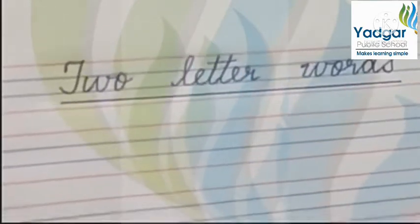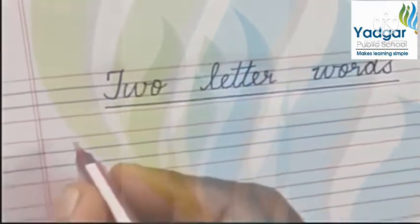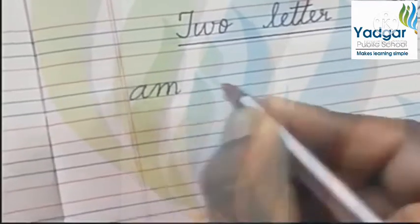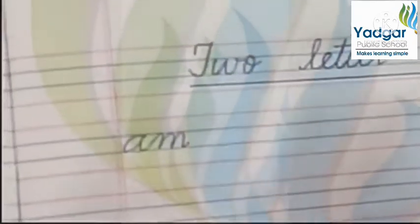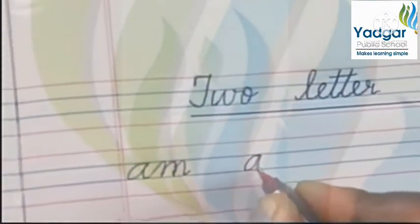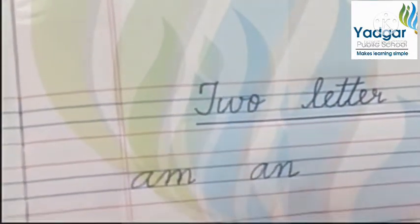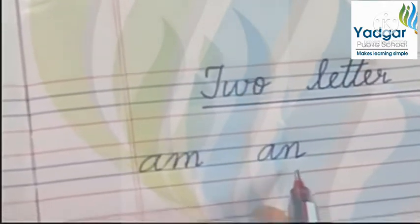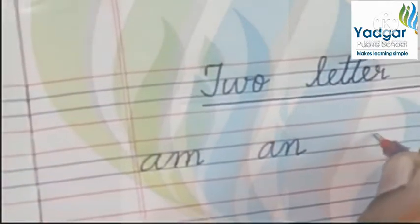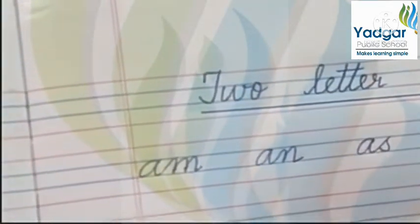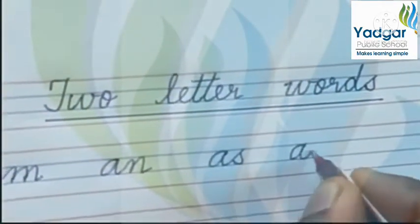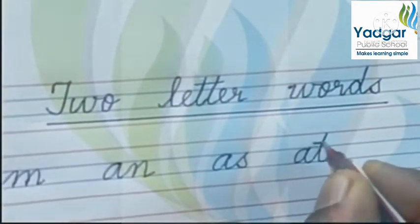Let us see some two letter words, starting from A. A-M is am. A-N is an. A-S is as. A-T is at.